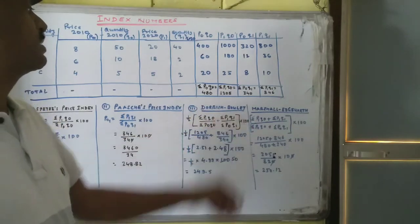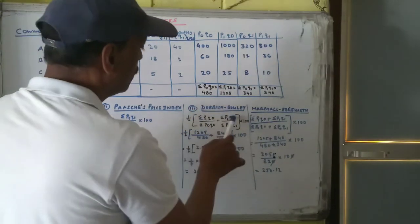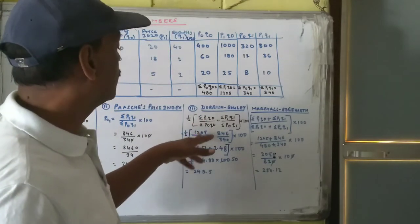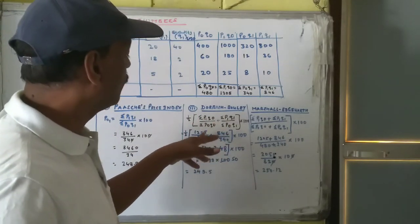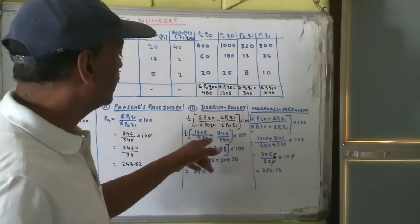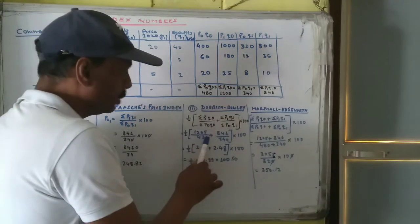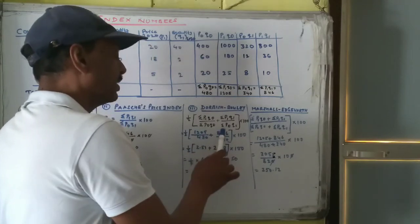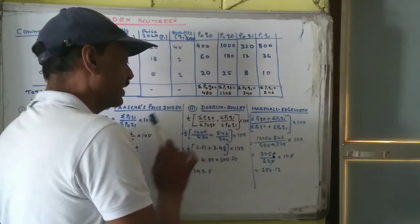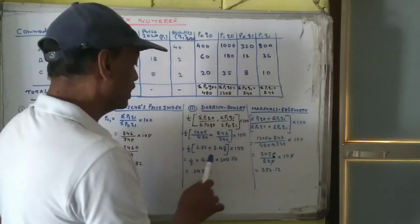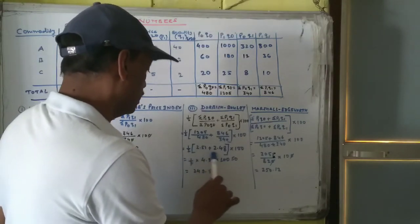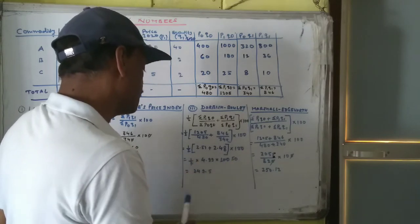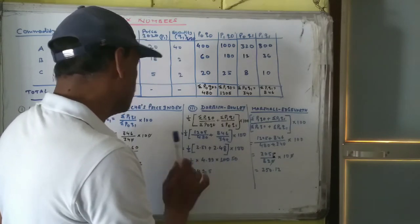This is the Dorbish-Bowley method. In Dorbish-Bowley method, this is the formula. You have to learn the formula carefully. And after writing the formula, the values will be put here. Then just divide this number by this and you will get this one. 1 by 2 is here. After getting the sum of these numbers, 2 and 100 can be cancelled out by 50. 499 into 50 is this.